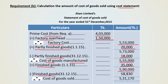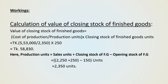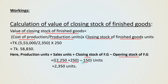Minus closing finished goods 58,830 taka. So cost of goods sold is 5,31,170 taka. For the working — calculation of value of closing stock of finished goods: value equals cost of production divided by production units, multiplied by closing stock units. Production units equals sales units plus closing stock units minus opening stock units: 2,250 plus 250 minus 150 equals 2,350 units.